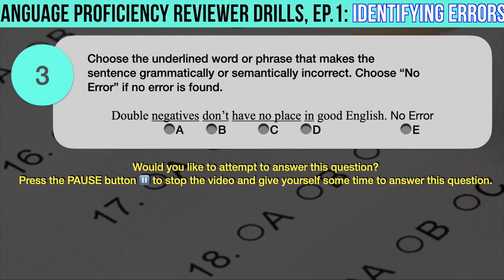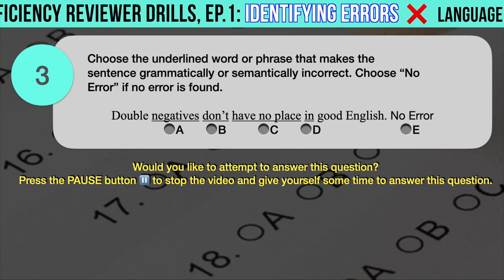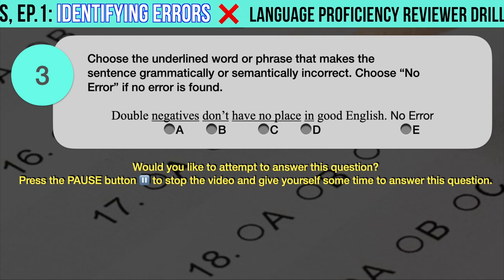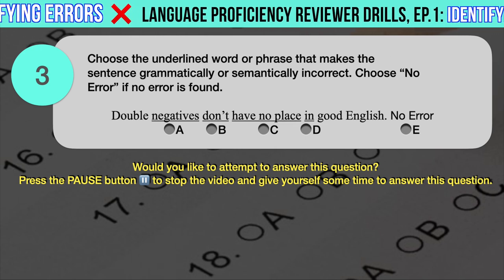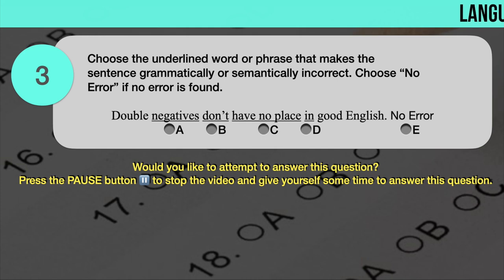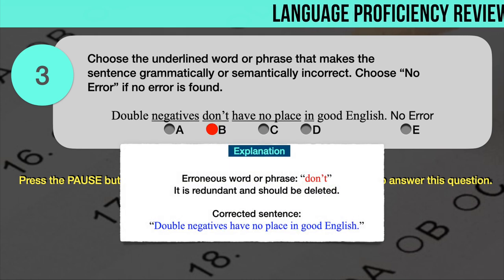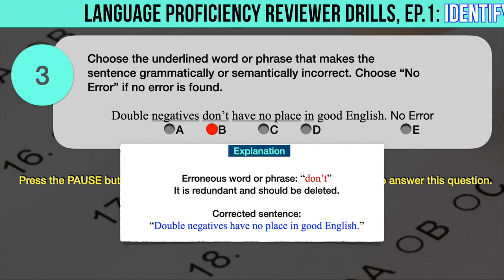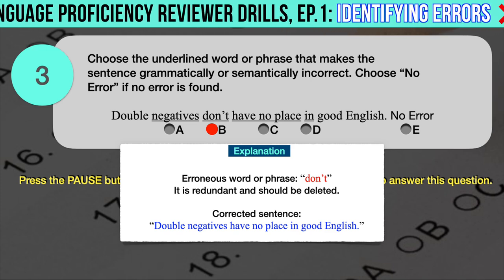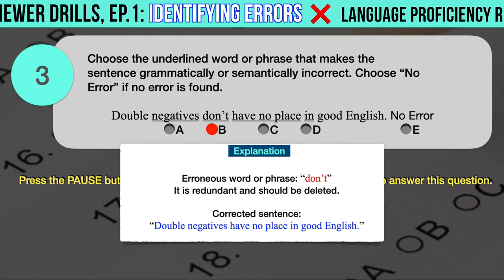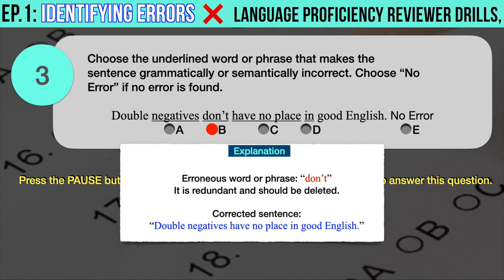Drill question number 3. Choose the underlined word or phrase that makes the sentence grammatically or semantically incorrect. 'Double negatives don't have no place in good English.' The underlined words are: A. Negatives, B. Don't, C. Have no place, D. No error. The correct answer is B. The erroneous word is 'don't.' The phrase 'don't have no place' is a double negative — exactly the kind of thing the sentence is discussing. The contraction 'don't' is redundant, so we simply delete it. The correct sentence: Double negatives have no place in good English.